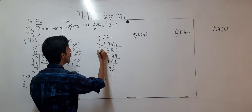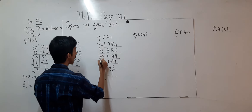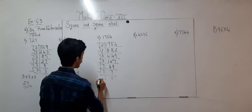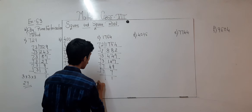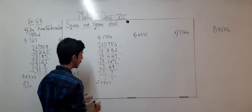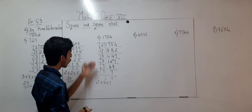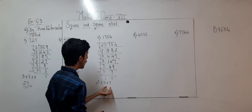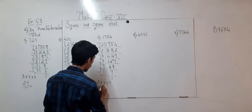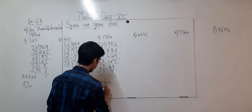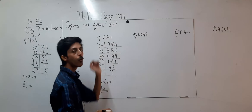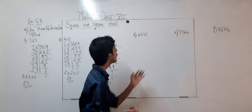So over here we have 2, multiplied by 3, multiplied by 7: 2 times 3 is 6, 6 times 7 is 42. So 42 squared is 1764.